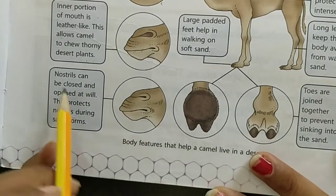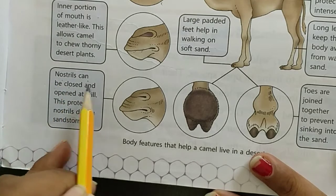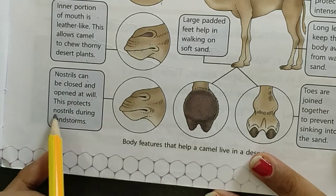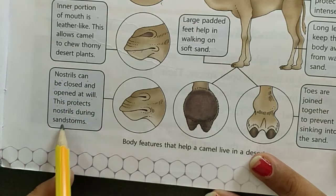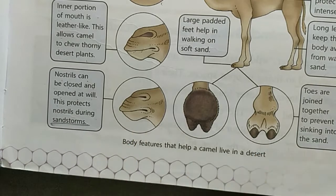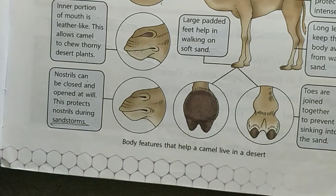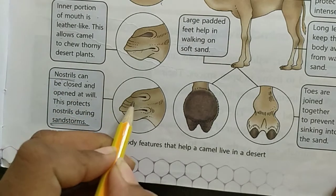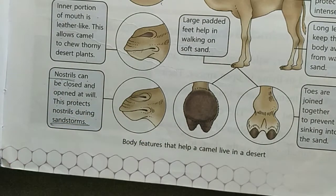Next: nostrils. During a sandstorm — dekho, maine bola chakri waali, dhul ka waadal, aise strong storms aate rehte hain desert region mein. In se protect karne ke liye unke nostrils — jo nose ke nostrils hote hain — woh kya open bhi hote aur close bhi ho sakte hain during a sandstorm, taki dhul andar na jaye.